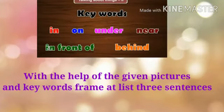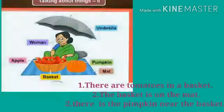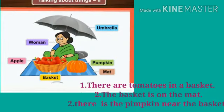With the help of the given pictures and keywords, make at least three sentences for each given picture. Look at this picture and observe it. You can see that there are tomatoes in a basket. The basket is on the mat. There is a pumpkin near the basket. Aniki asha prakarchi vakya tayar kara.